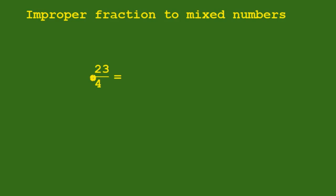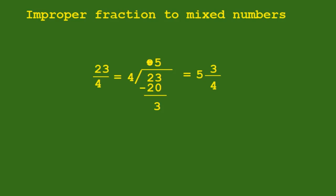This is 23 divided by 4. So we have 23 divided by 4 — we have 5. 5 times 4 gives us 20, so minus 20. 23 minus 20 is 3. So the quotient is 5, the remainder is 3, and the divisor is 4. So 5 and 3 over 4. So 23 over 4 is equal to 5 and 3 over 4.